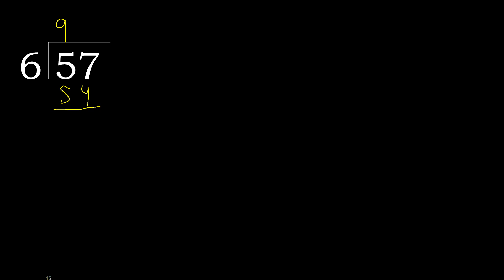57 minus 54 is 3. Next — there is no more number, therefore we need to complete.